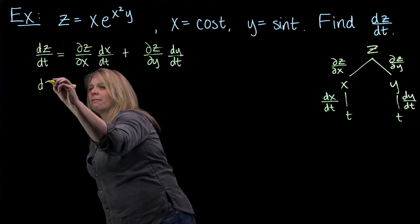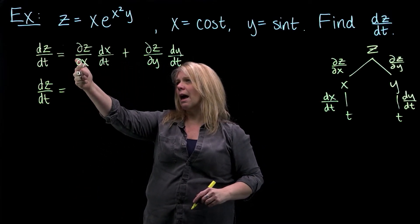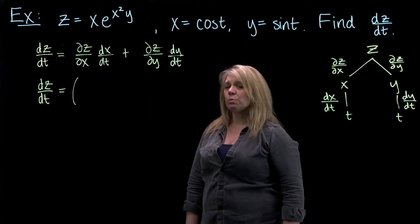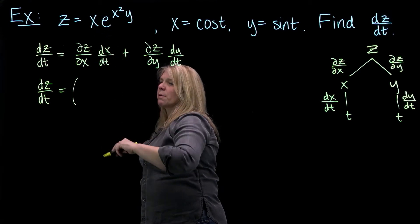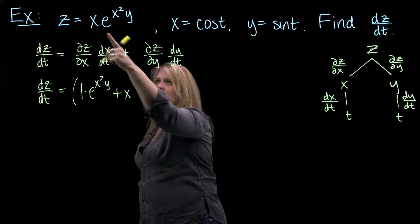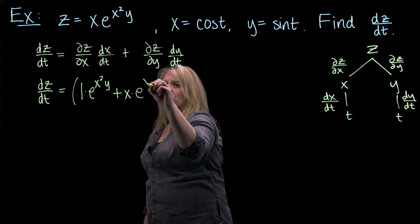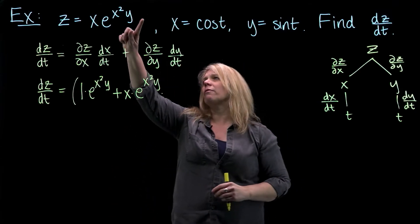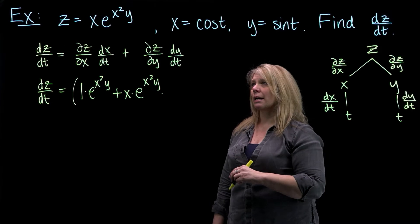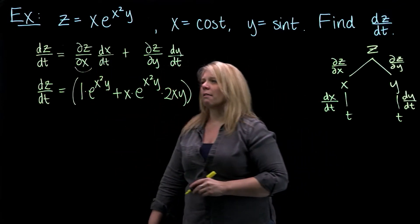Let's go ahead and let the symbols tell us what to do. I'm going to find dz/dt. The first thing I need is del z/del x — that's the derivative of the z function with respect to x. When I differentiate with respect to x, I need to use the product rule. The derivative of x with respect to x is just 1 times the second function, plus the first function times the derivative of the second function with respect to x. So derivative of e to that power is e to that power times the derivative of the exponent, which gives 2xy since we're differentiating x²y with respect to x. So all of that is my del z/del x.